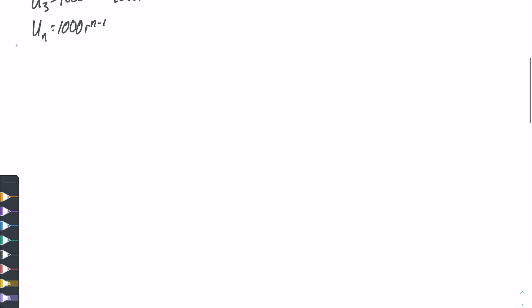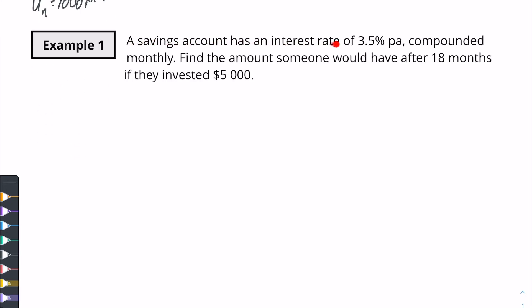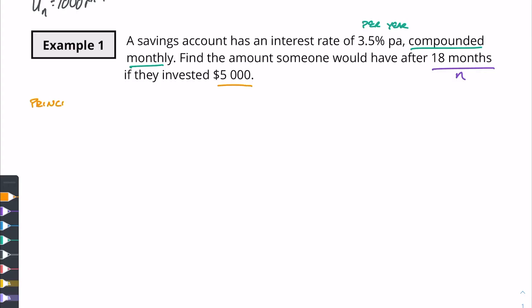So let's look at an example here. A savings account has an interest rate of 3.5 percent per annum. This is per year. Compounded monthly. Find the amount someone would have after 18 months. Okay so this is going to be our n value. If they invested five thousand dollars. Our beginning amount is equal to five thousand. We know that we've got 3.5 percent per year. We're going to be compounding monthly. And we have 18 months.